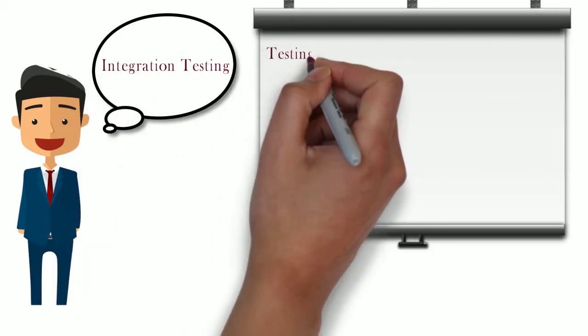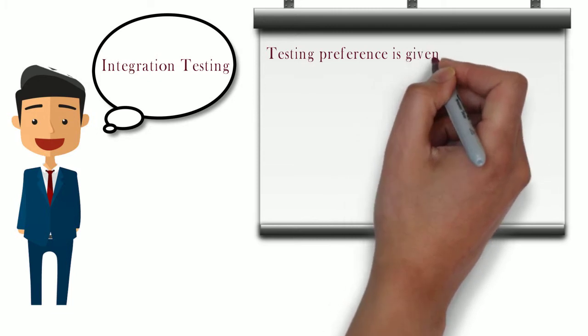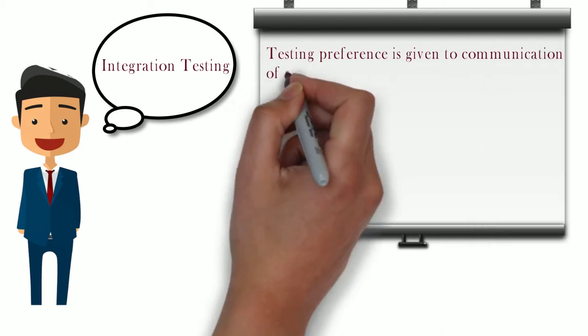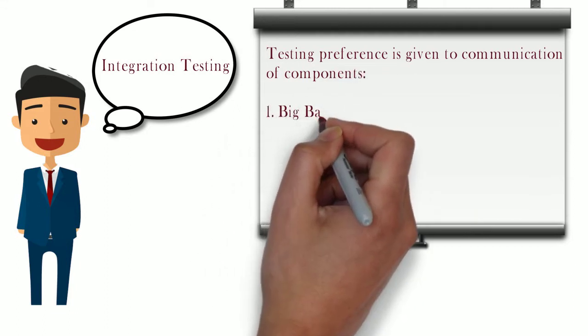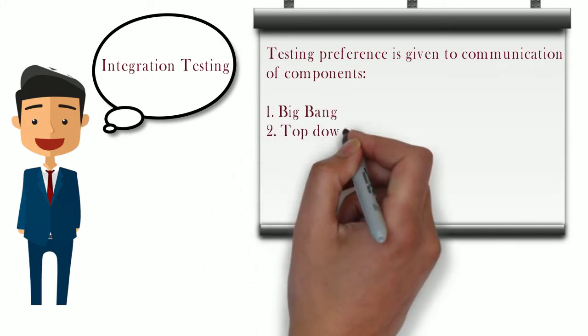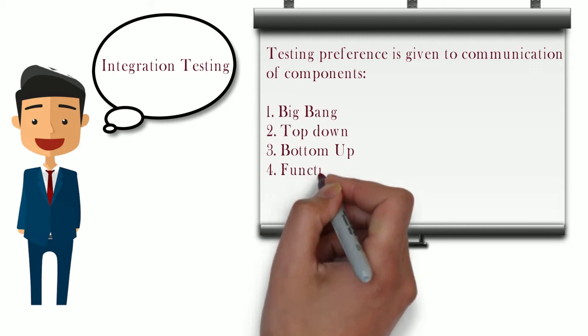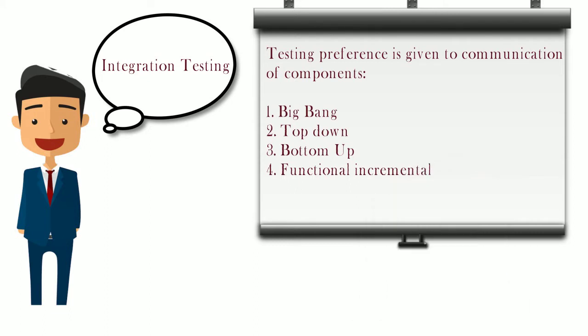The next test level is integration testing, where the different components are integrated and testing is performed. All components — customer registration, placing an order, and cancellation or modification — are integrated and tested together. Testing ensures the flow is not affected. The typical flow is: a customer registers, searches for a product, adds it to the cart, places an order, and then modifies or cancels if needed. Testing preference is given to the communication between components.